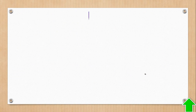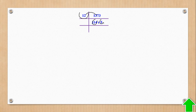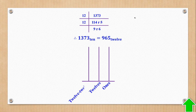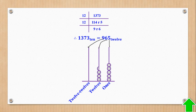Now we convert 1373 base 10 to base 12. Dividing 1373 by 12 gives quotient 114 remainder 5. Dividing 114 by 12 gives 9 remainder 6. Since 9 is smaller than 12, we stop. So 1373 base 10 equals 965 base 12. We can now draw the base 12 abacus: on the units column put 5 beads, on the twelves column put 6 beads, and on the 144s column put 9 beads.